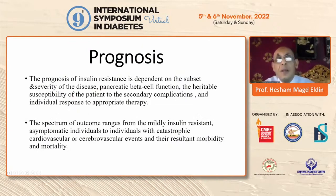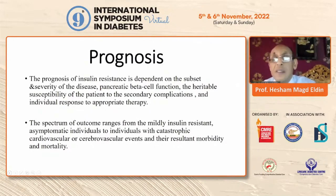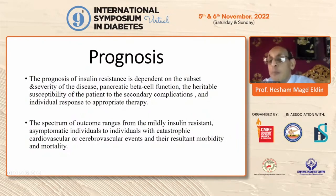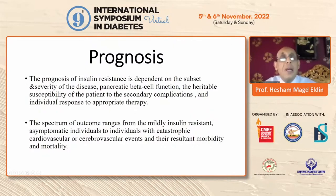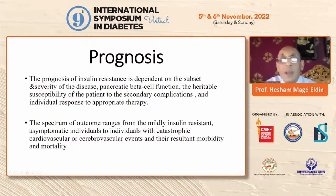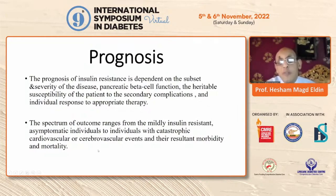What concerns patients coming to clinic is prognosis. The prognosis of insulin resistance depends on many factors, including the severity of the disease, pancreatic beta cell function, hereditary susceptibility, and the spectrum of outcomes ranges from nothing — a mighty insulin resistance in an asymptomatic individual — to catastrophic cardiovascular or cerebrovascular events.